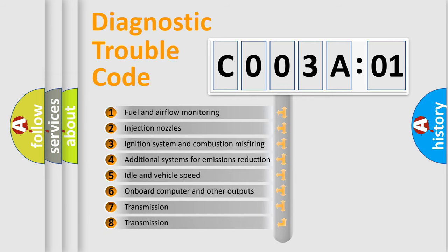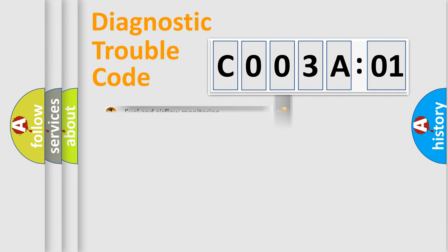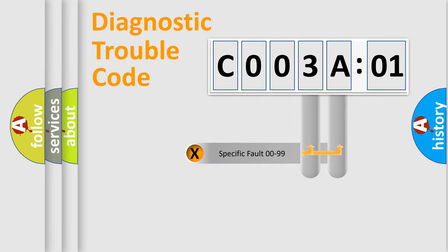The third character specifies a subset of errors. The distribution shown is valid only for the standardized DTC code. Only the last two characters define the specific fault of the group.